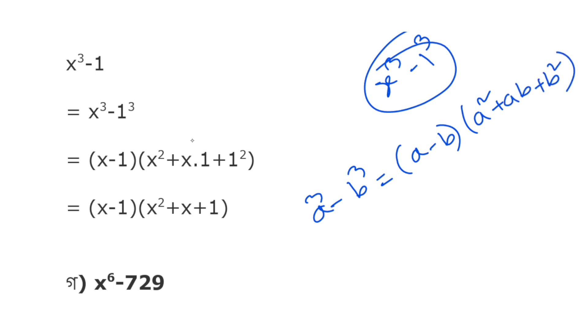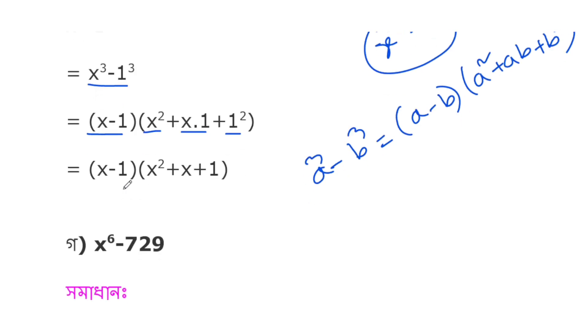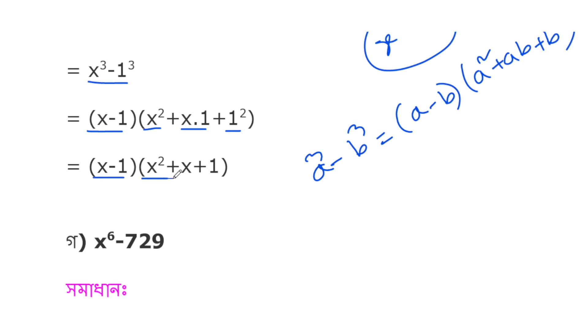So we have (x-1) as the first factor. For the second factor, we get x² and then x times 1, which gives us x²+x+1.